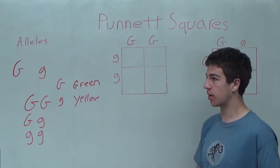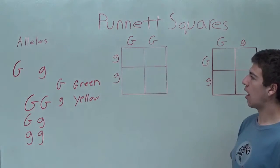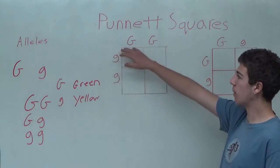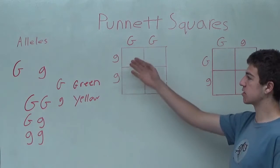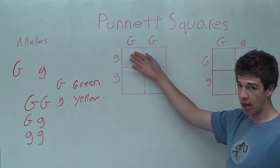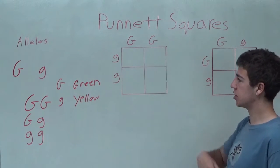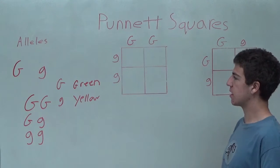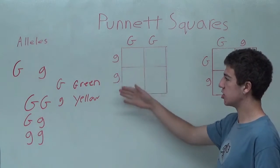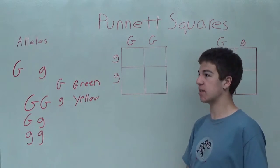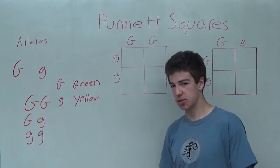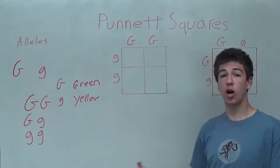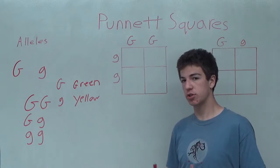The way you use the Punnett square is, in this example, you write one parent on the top and the other parent on the side. So our first parent has a genotype of capital G and capital G, and the other parent has a genotype of lowercase g and lowercase g. So it has two phenotypes of green and yellow, and they will be sexually reproducing, and we will see what their offspring's alleles could look like.